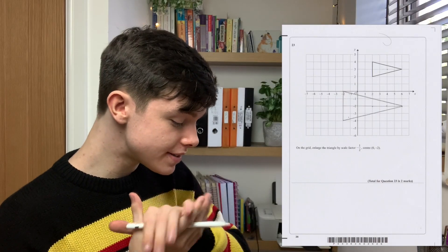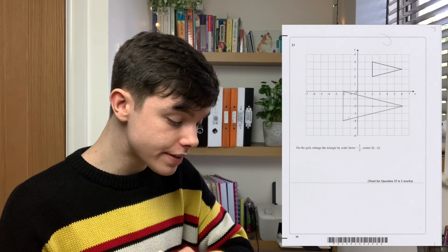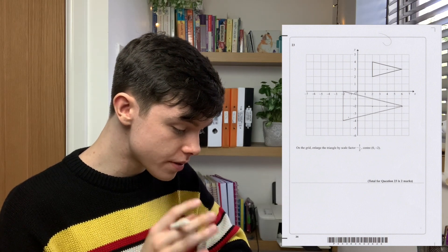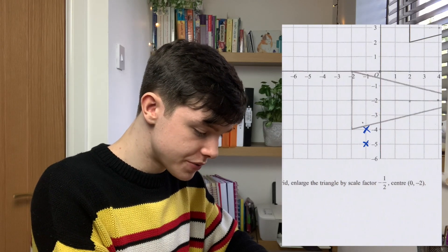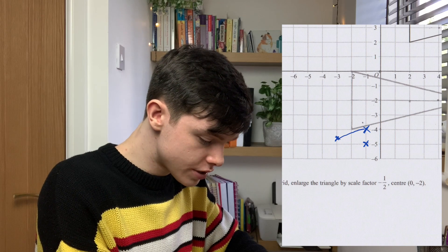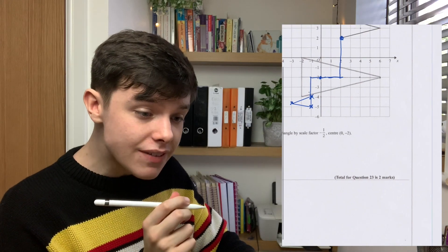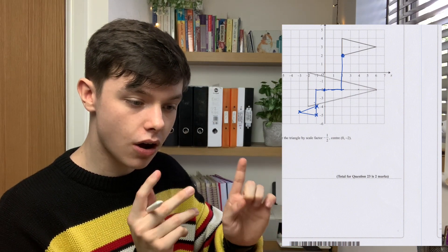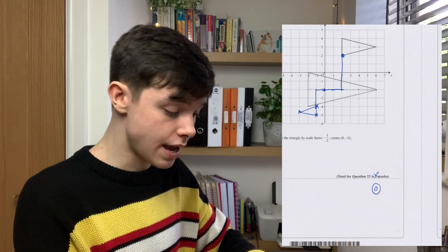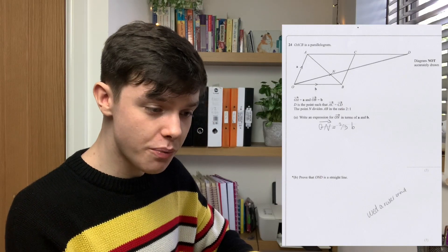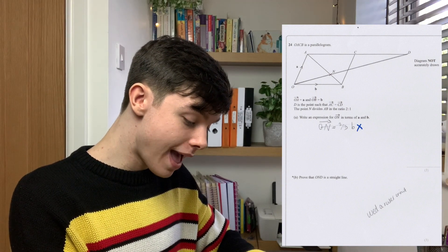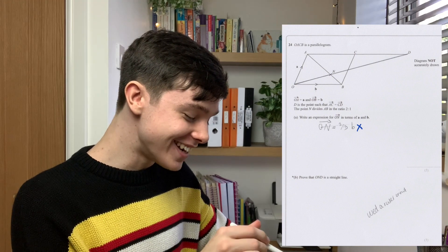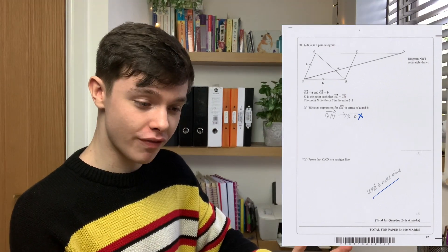Question 26 says, on the grid, enlarge the triangle by a scale factor minus a half, center 0 minus 2. The triangle should have looked something like that. We can't give any marks there because it's not the correct size or orientation. So, unfortunately, that's zero. Question 24. Let's see if we can give one mark for the O-N. No. Part B says, prove that O-N-D is a straight line. I already know what Rosie's written here. Use the ruler in it. I mean, it's very true but we need to prove it. Okay, it's now time to add up all of Rosie's scores and see how well she did.